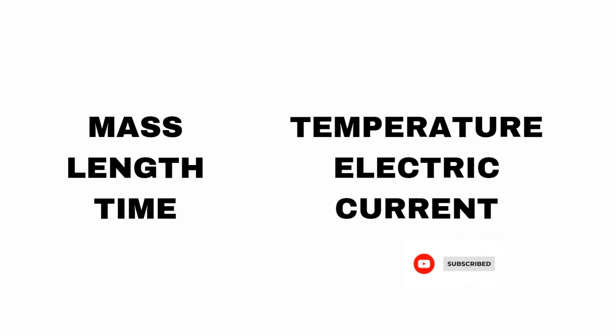The main fundamental quantities are mass, length, and time. Also included are temperature, amount of substance, luminous intensity, and electric current. These are the fundamental quantities. Derived quantities include speed, force, and power, which are derived from the fundamental ones.